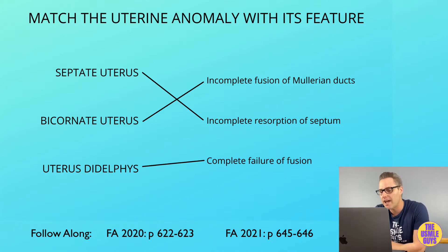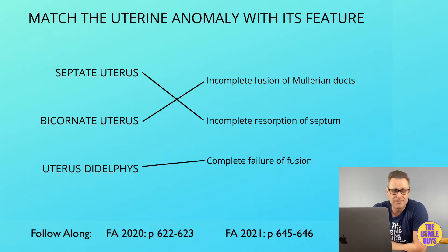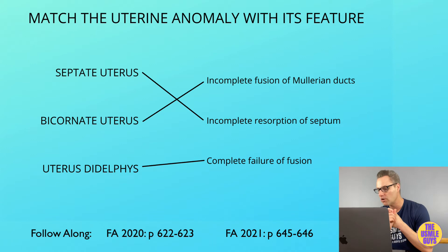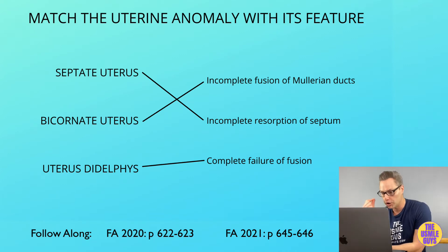Let's talk more about the mesonephric and paramesonephric ducts. The mesonephric ducts are also termed the Wolffian ducts; the paramesonephric ducts are also called the Müllerian ducts — they're interchangeable. The mesonephric ducts develop into the male internal structures except for the prostate, giving rise to the epididymis, ejaculatory duct, ductus deferens, and seminal vesicles. There's also a female remnant of this structure known as the Gartner duct.